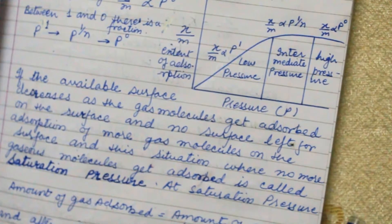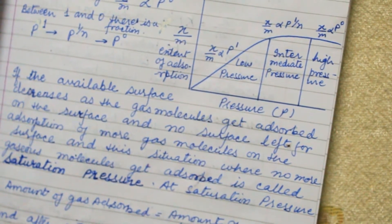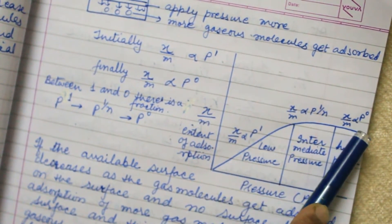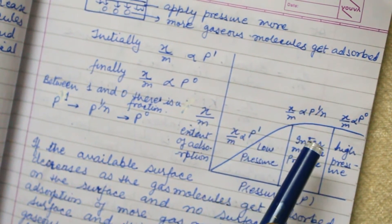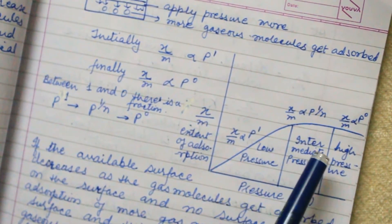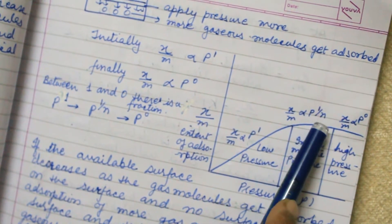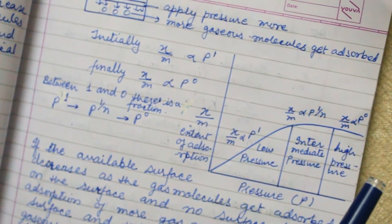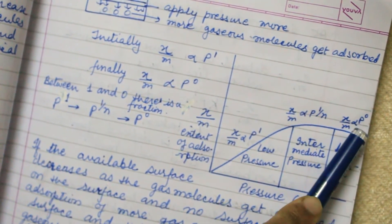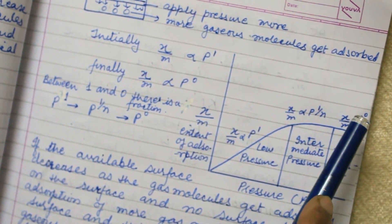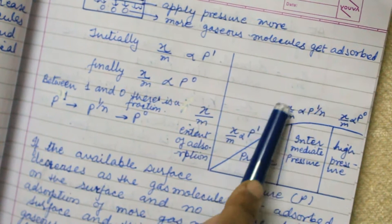So we draw a graph where X/M is plotted against pressure. At low pressure, X upon M is directly proportional to P¹. At intermediate pressure, X upon M is directly proportional to P^(1/N), where N is an integer or any whole number. At high pressure, X upon M is directly proportional to P⁰. So between 1 and 0, we have the fraction P^(1/N) — this is the main Freundlich isotherm.